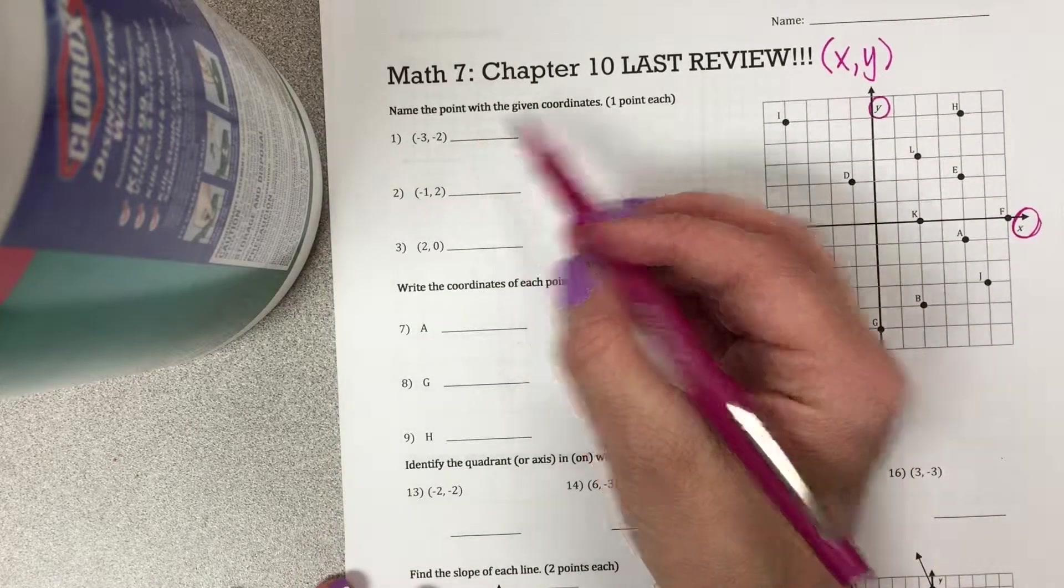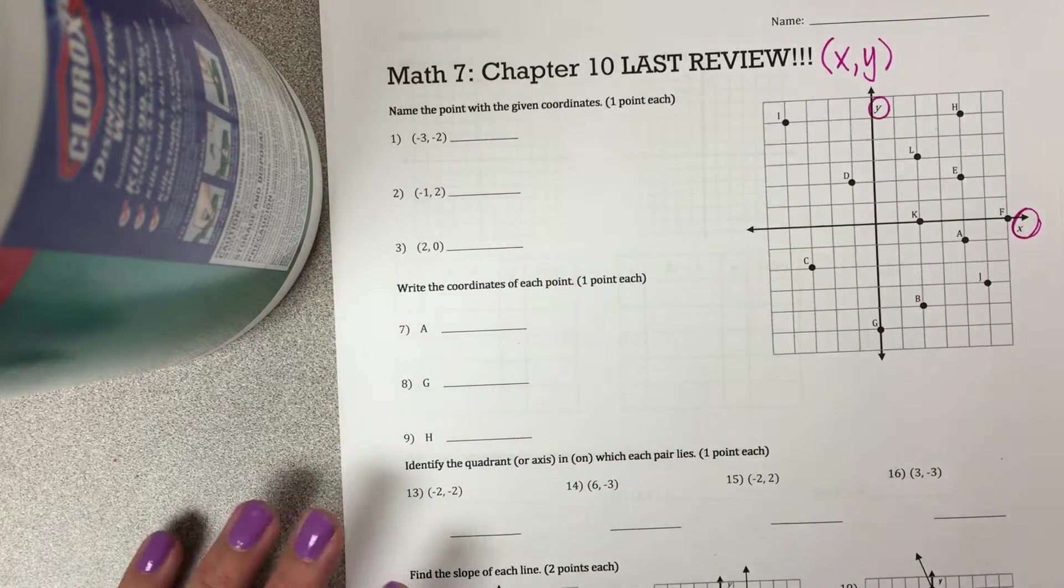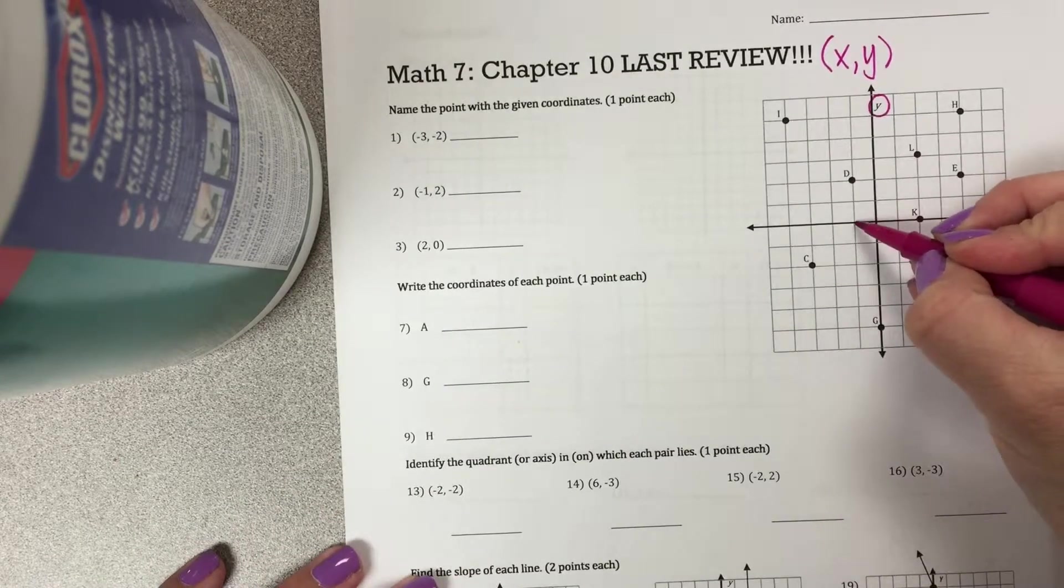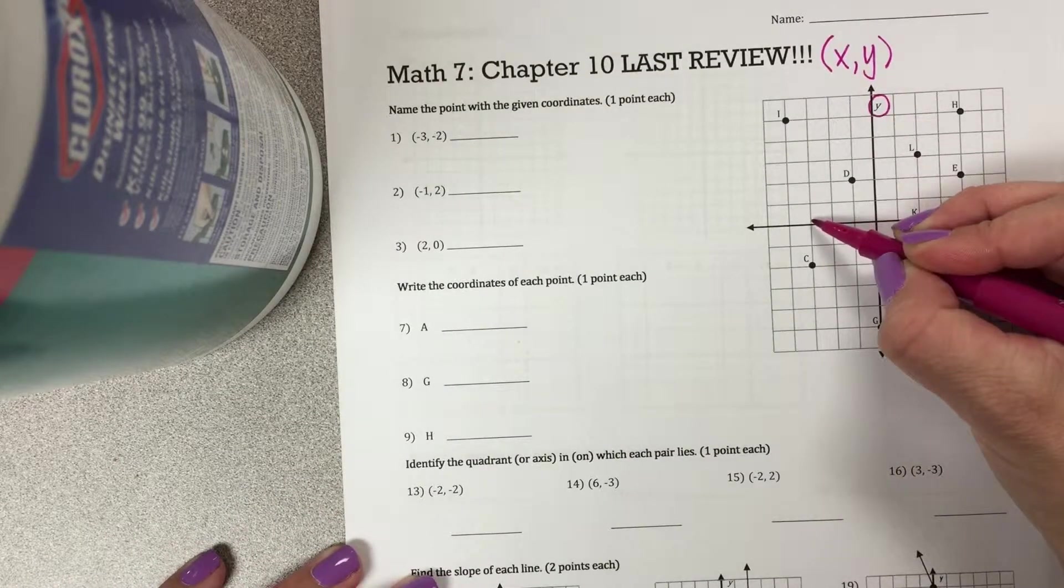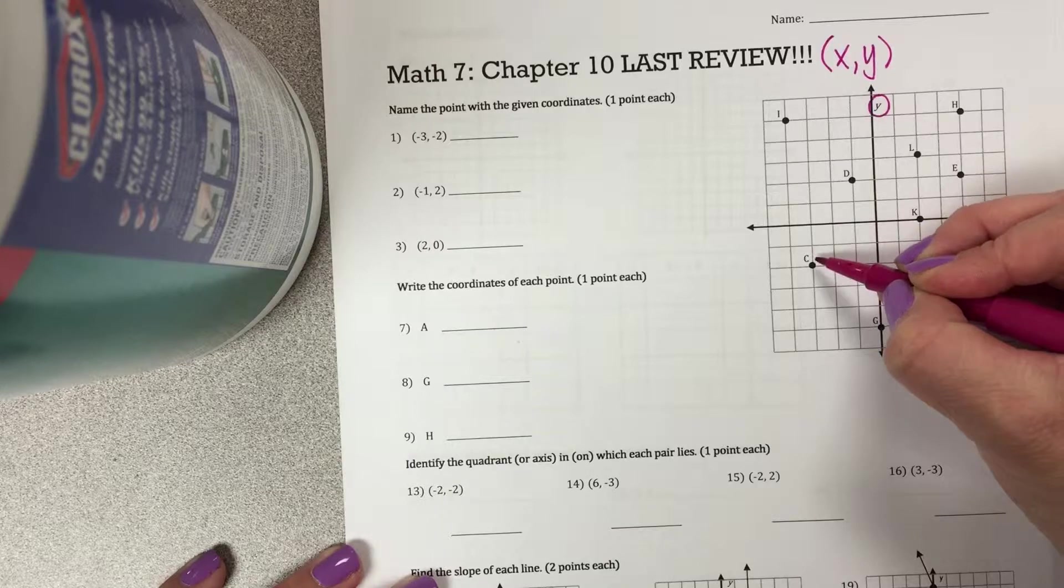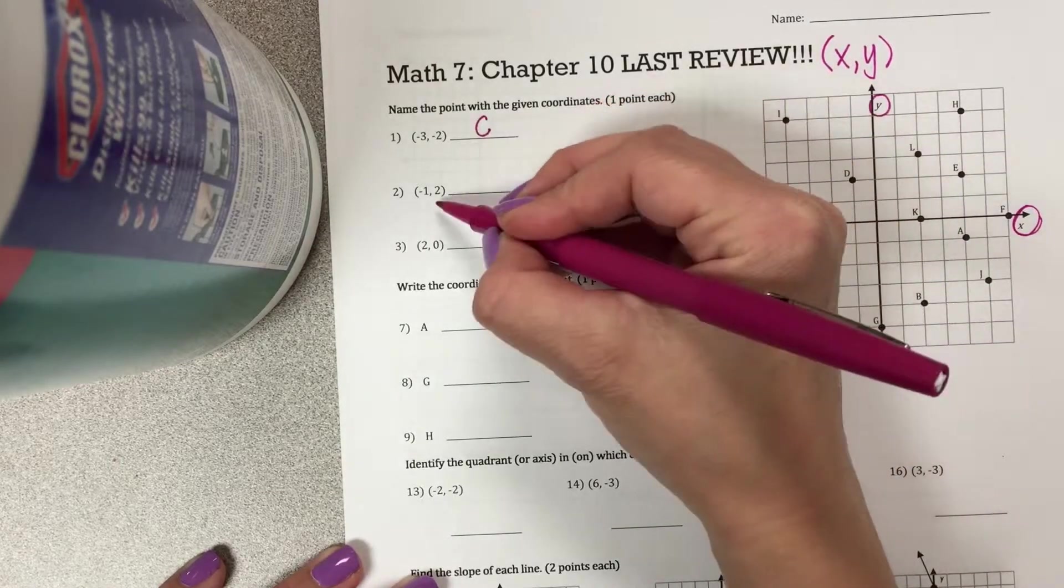So the first one says name the point with the given coordinates. So over negative 3, negative 1, 2, 3, and then down to negative 2, 1, 2. That's C.